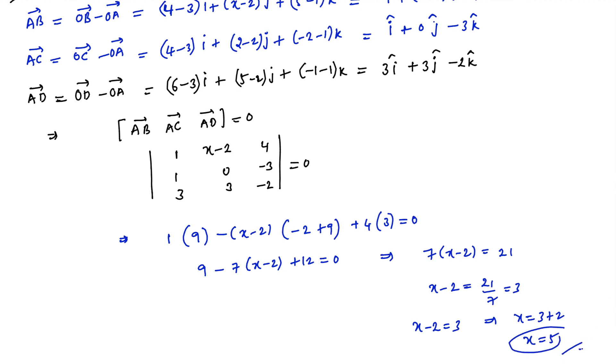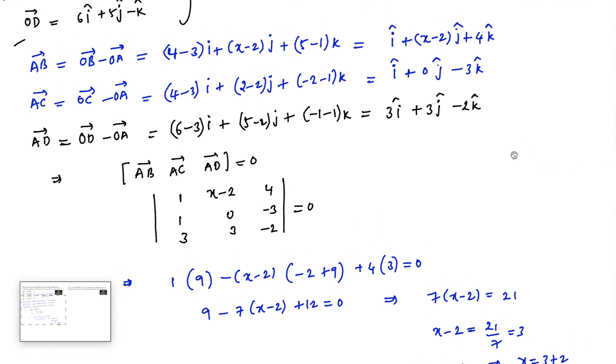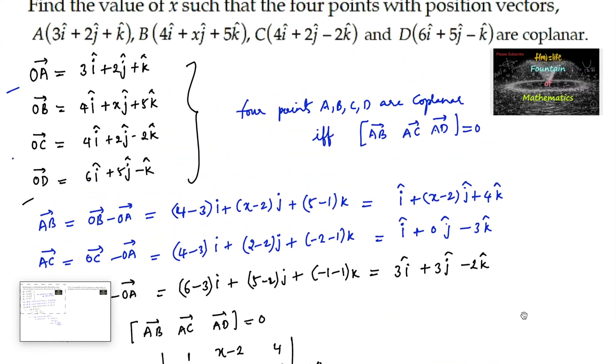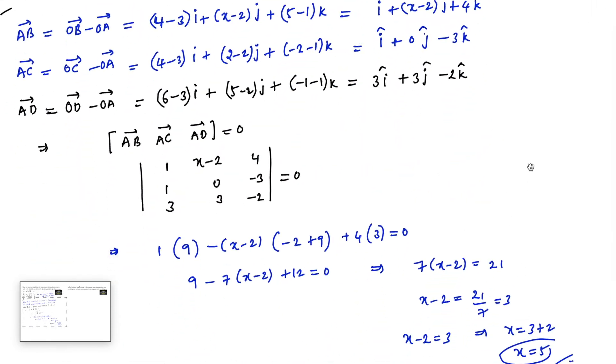So the value of x for which the given four points are coplanar is x = 5.